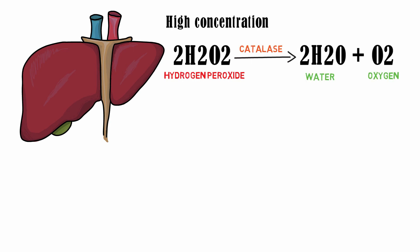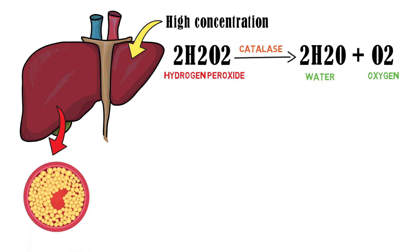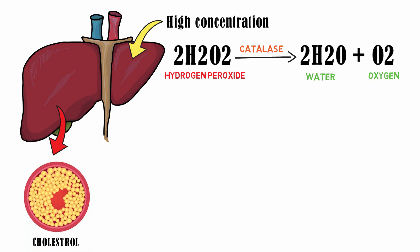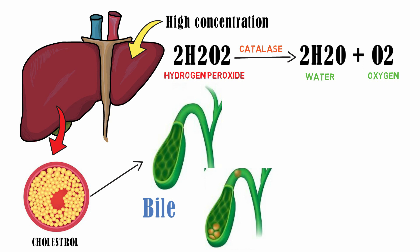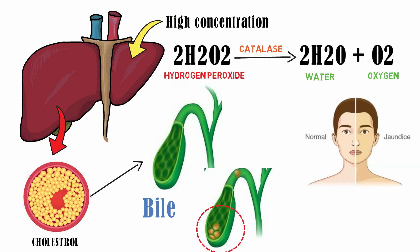The liver detoxifies fat-soluble toxins into water with the help of the enzyme catalase, which is present in high concentration in the liver. Cholesterol is chiefly synthesized in the liver, and excess cholesterol is removed in bile. Excess cholesterol can precipitate to form gallbladder stones, which may lead to jaundice.